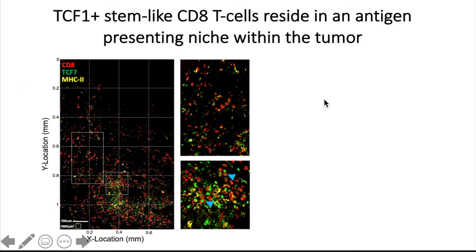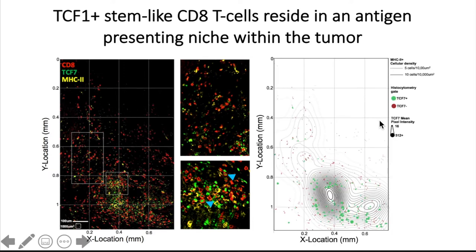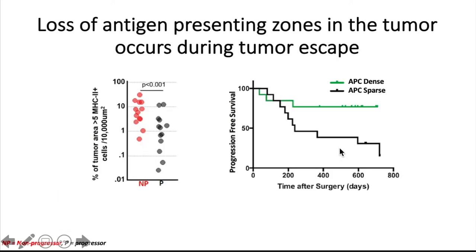To begin answering this question, we also wondered where these cell populations were located within the tumor and if they may be associated with additional cell types. Using immunofluorescence, we were able to observe dense aggregations of immune cells within the tumor. What we noticed was that TCF1-positive stem-like cells reside in close proximity with densely clustered antigen-presenting cells, whereas terminally differentiated cells are more dispersed throughout the tumor. We can also quantify this by creating an immuno map of the tumor, overlaying antigen-presenting cell density with the XY locations of stem-like CD8 T-cells in green and terminally differentiated CD8 T-cells in red — again noting how stem-like CD8 T-cells reside within a high antigen-presenting cell density niche in the tumor.